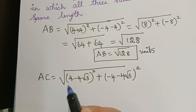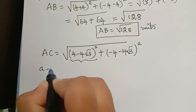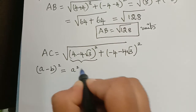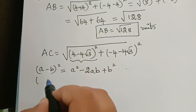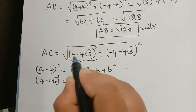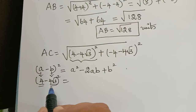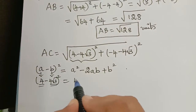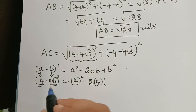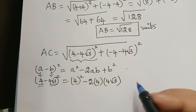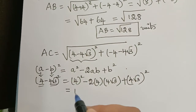We have to expand this carefully because the term involves an irrational root. We apply the (a - b)² = a² - 2ab + b² formula. Here a = 4 and b = 4√3. So (4 - 4√3)² = 4² - 2·4·4√3 + (4√3)².